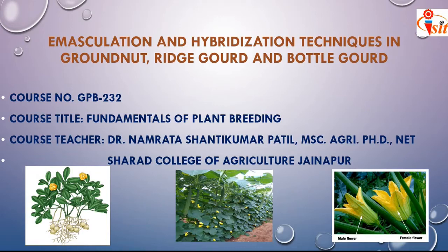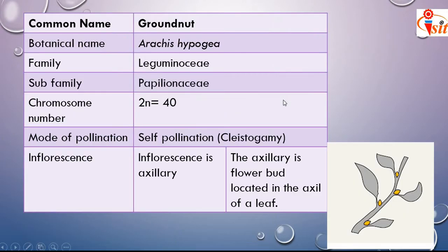Good morning students, today we are going to start dissection of groundnut, ridge gourd flower and bottle gourd flower. The common name is groundnut, botanical name is Arachis hypogea, family is Leguminosae and every Leguminosae family has the sub-family Papilionoideae.